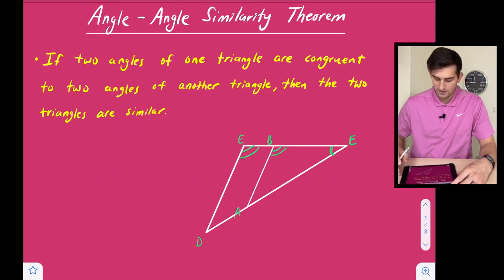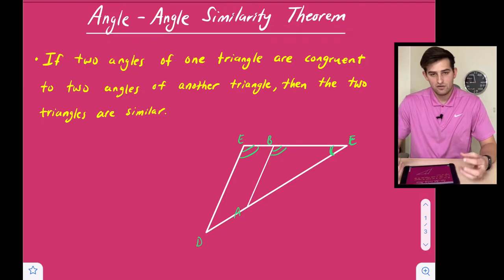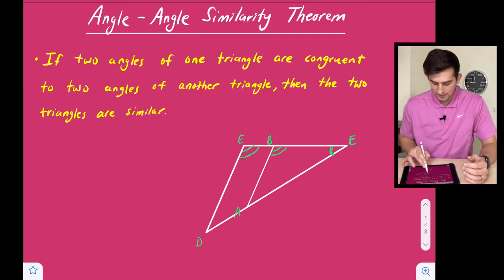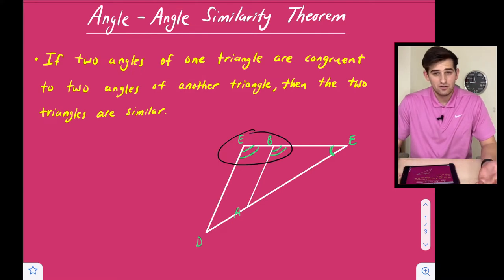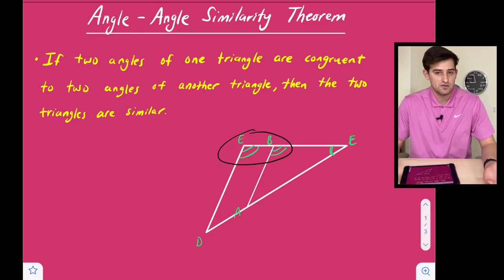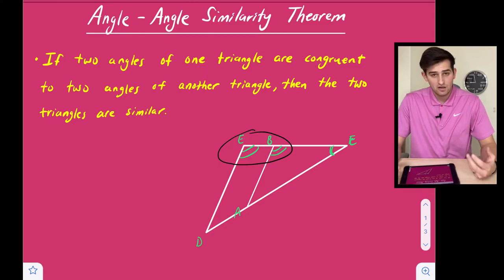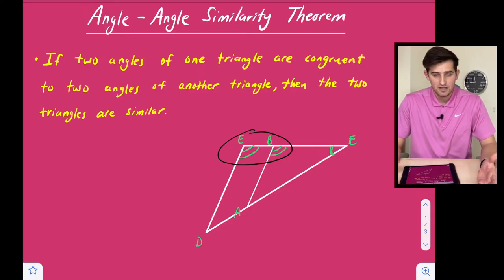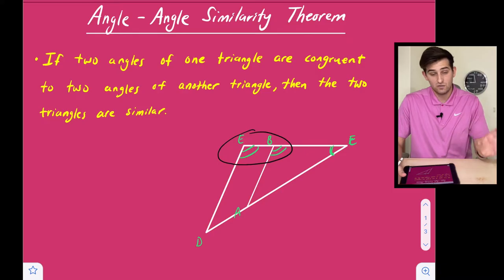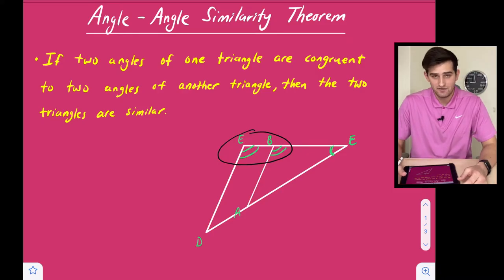That gives us that angle C and angle F are congruent. We also have the markings where angle B and angle E are congruent. So we know that the third angle of each of those triangles would also be congruent, because the three angles have to add up to 180 degrees. Since all three angles are congruent to each other, these shapes are similar — there was some dilation by a scale factor that took one shape and made it the size of the other.